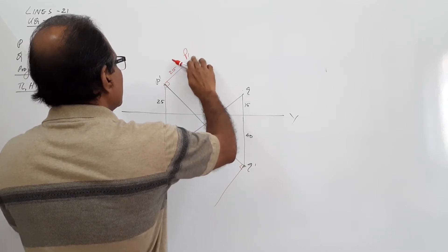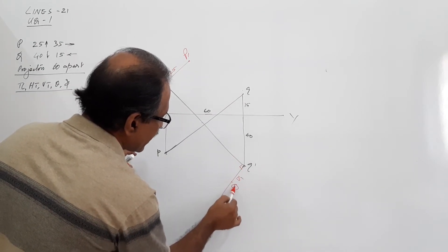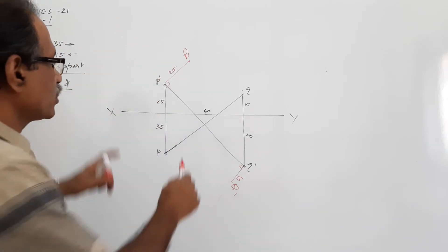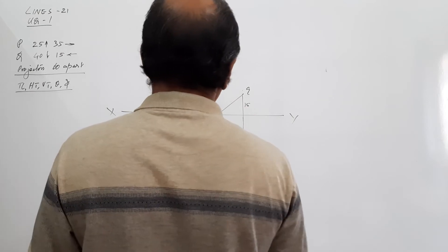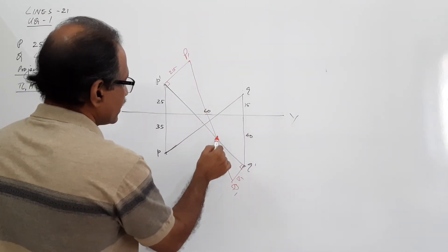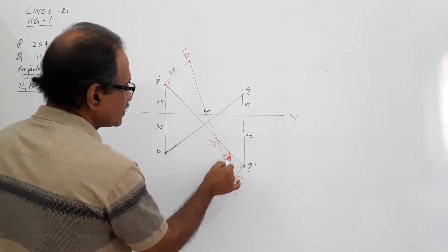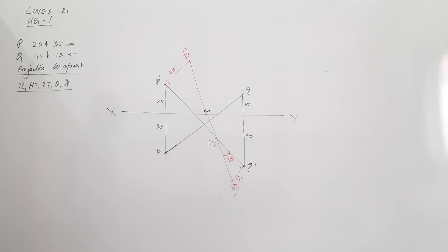And on this you mark 15, you get capital Q1. You want to join it, it's drawn on the elevation. This is VT therefore, and this angle is phi. This is true length.